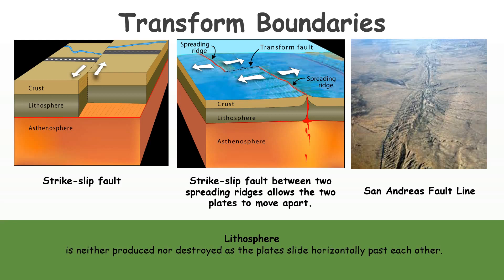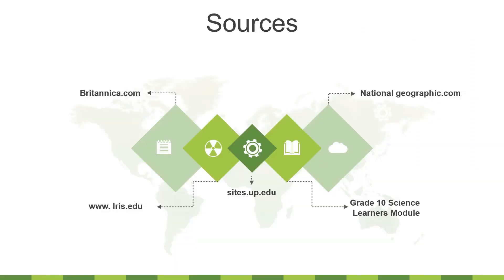From convergent, divergent, and transform boundaries, the commonality between the three is that they always produce earthquakes. That is the end of our discussion for the day. You may want to check out the sources for more information on plate tectonics.